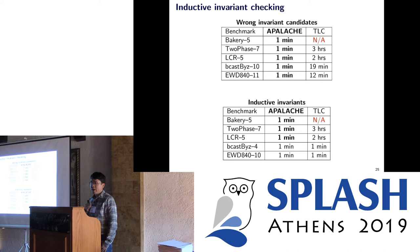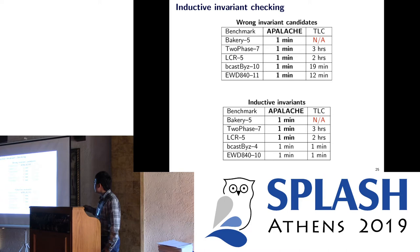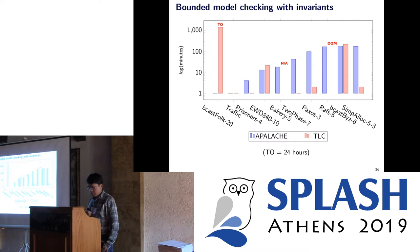For inductive invariant checking we have two tables: the first is for wrong candidates and the second is for right candidates. You can see that our model checker is better than TLC — much better. TLC also doesn't accept infinite sets of integers, which our checker handles.